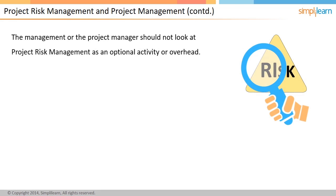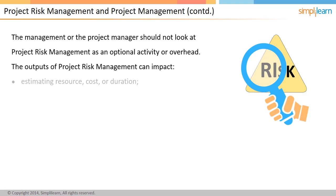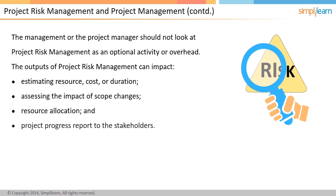The management or project manager should not look at project risk management as an optional activity or overhead. The interface between project risk management and other processes of project management must be clearly defined to address the uncertainty. The outputs of project risk management should be considered within the project management processes. They can impact various aspects like estimating resources, cost, or duration, assessing the impact of scope changes, resource allocation, and project progress reports to the stakeholders. The effectiveness of project management processes is increased by using information and results from project risk management.